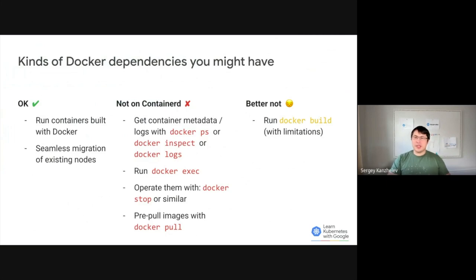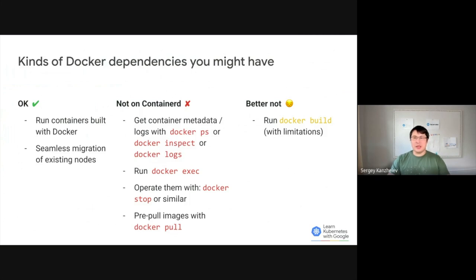You cannot get container information using Docker PS or Docker inspect commands. As you cannot list containers, you cannot get logs, stop containers, or execute something with Docker exec. By the way, stopping containers via Docker CLI directly was never a good idea, as it is better to allow Kubernetes to orchestrate them, so you don't confuse Kubernetes with disappeared containers. You can still pull images or build them using Docker build, but images built or pulled by Docker would not be visible to Containerd in Kubernetes, and you need to push them to a registry to allow them to be used by Kubernetes.